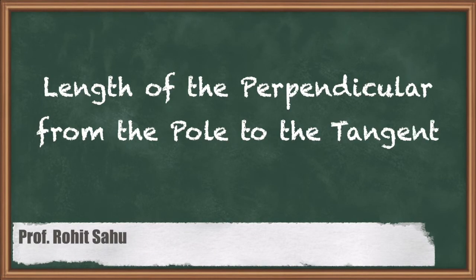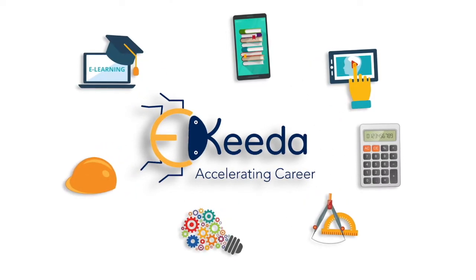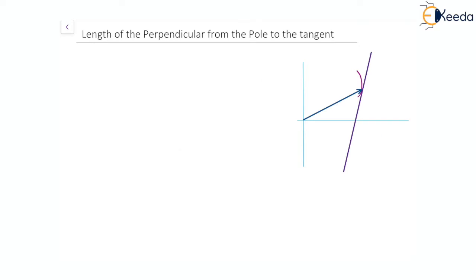In this session we'll discuss the topic of length of the perpendicular from the pole to the tangent. In this diagram, pole O is there and one point on the curve is named as P, where the curve is r = f(θ). This is the initial line, so the angle made by the radius vector will be theta, and the length OP is r, since P is the point on the curve.